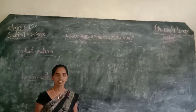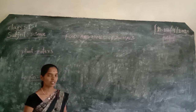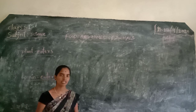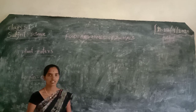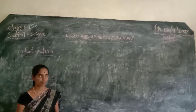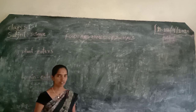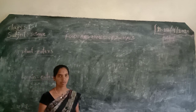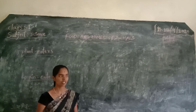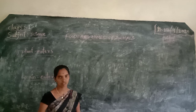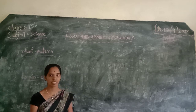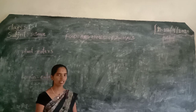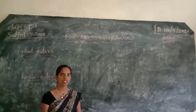What do animals eat? Some animals eat plants and leaves, some animals eat other animals, and some animals eat both plants and animals. Their food habits are of different types. Different animals have different eating habits.